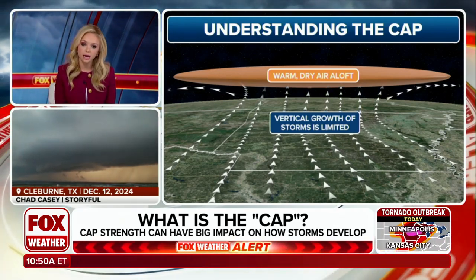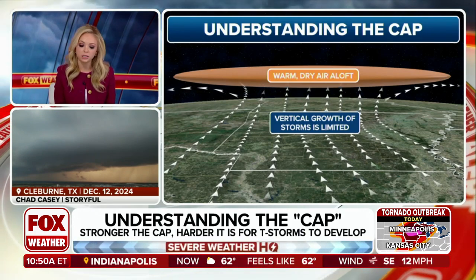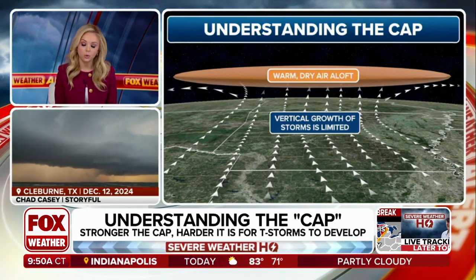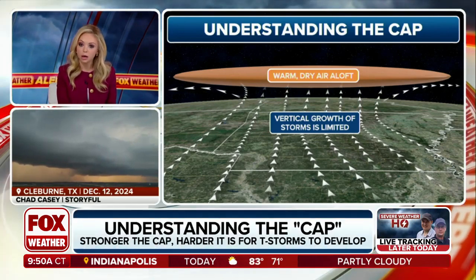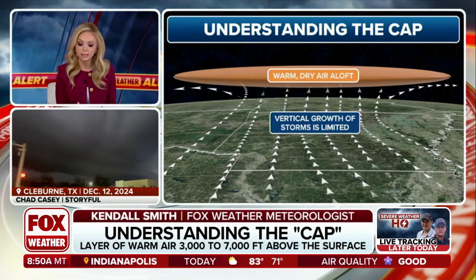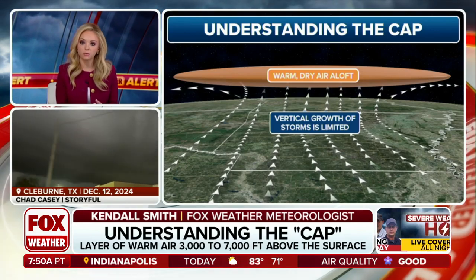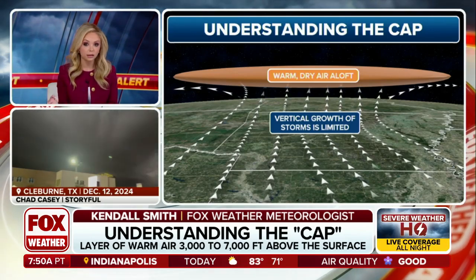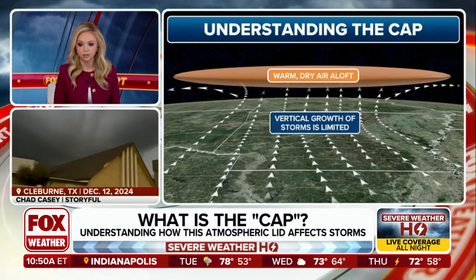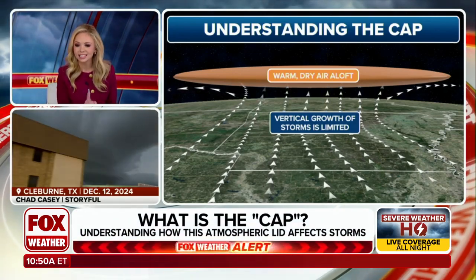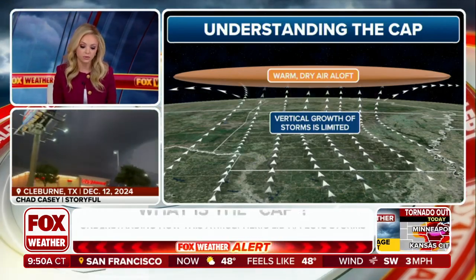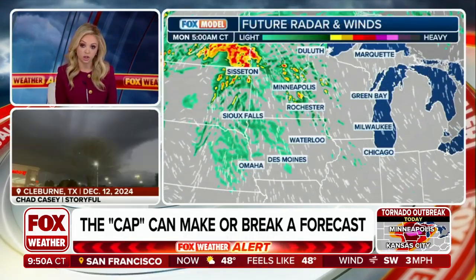That warm layer helps to suppress vertical storm growth. A good way to think about this is if you have a pot of boiling water on a stove with a lid on it — your water may begin to boil, but it remains confined in the pot. But if you remove that lid, all of the steam and bubbles begin to just explode right out of that pot. And that's exactly what takes place in the atmosphere when we're concerned with severe weather.